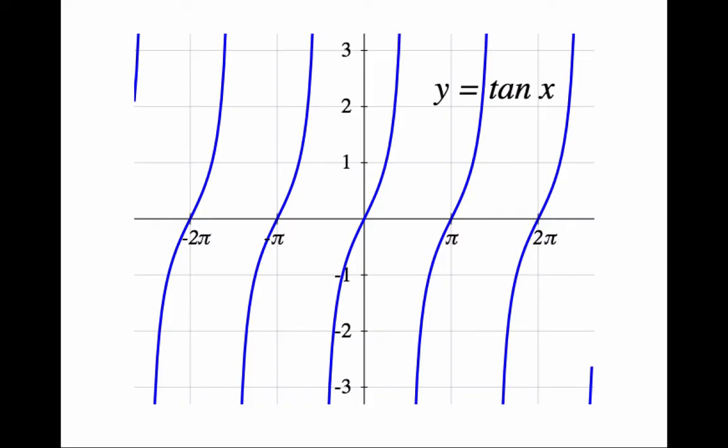Like we did for sine, we can reduce the domain to make it 1 to 1. It is standard to consider the function defined by just this piece of the graph, in red. Then it is 1 to 1, and we call its inverse arctangent.